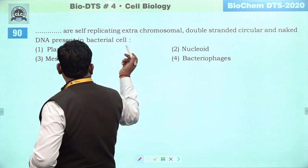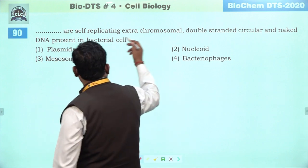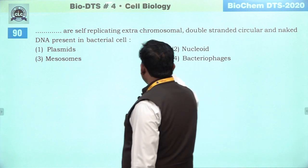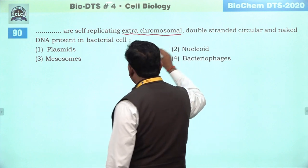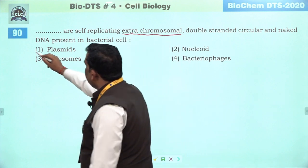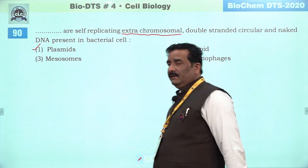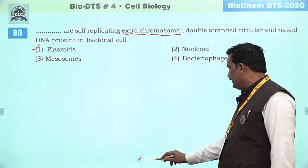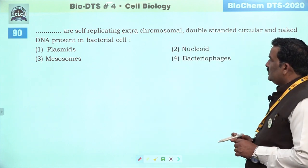Next question: if we affect plasmid — extrachromosomal — yeh aapko clue de raha hai ki yeh plasmid isa right answer hai. Third is the right answer.